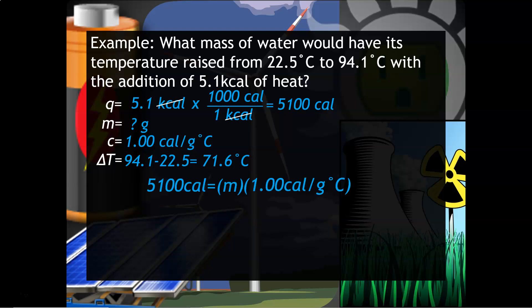Then the rest, again, is just plugging and chugging. You have to do a little bit of algebra. To solve for M, you're going to have to divide both sides by the 1 calorie and the 71.6 degrees Celsius. And then when you do that, your units will cancel out appropriately so that you get a mass of 71 grams.